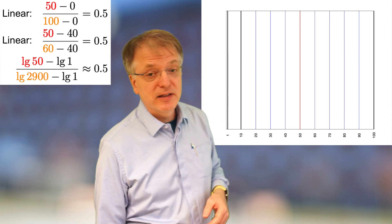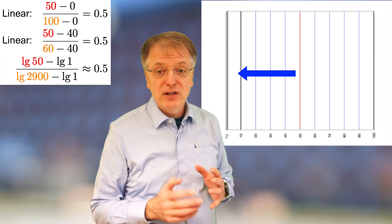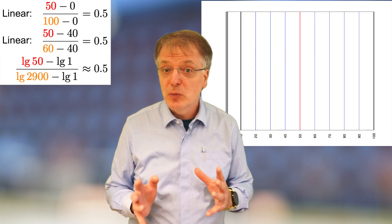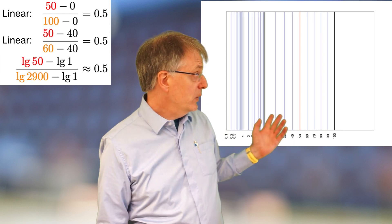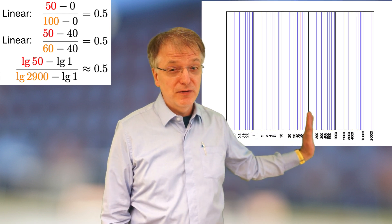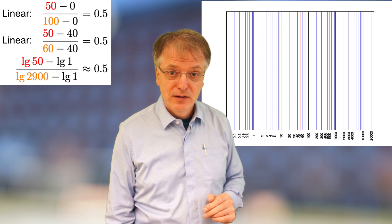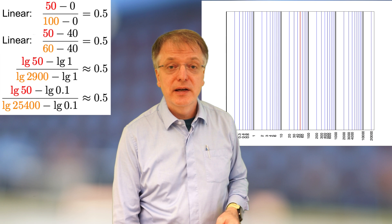Let's make a second attempt. Let's now shift the linear scale such that it starts with the value 0.1 instead and transform once again into a logarithmic scale. Now we get that 50 is in the middle of 0.1 and approximately 25400. And if we do the same kind of calculation, we see why that is.